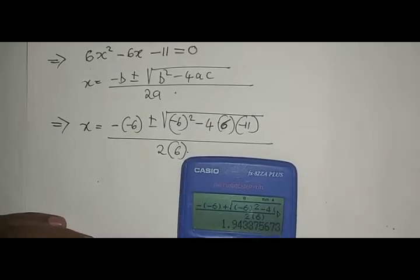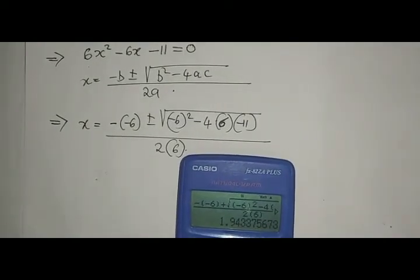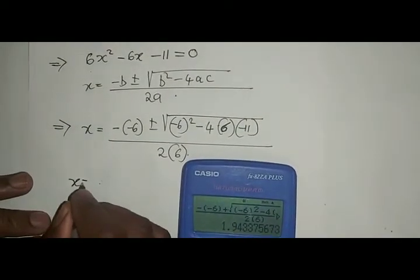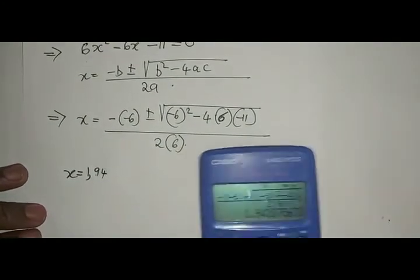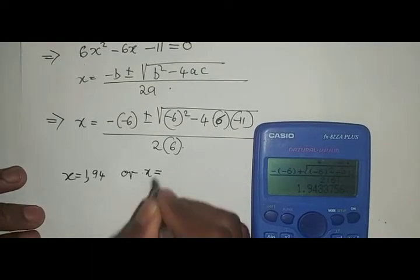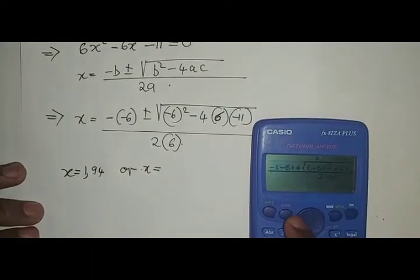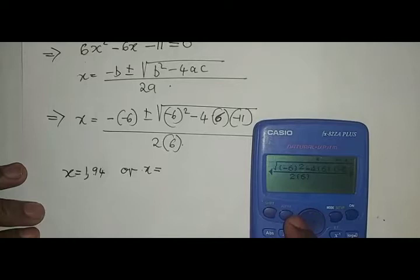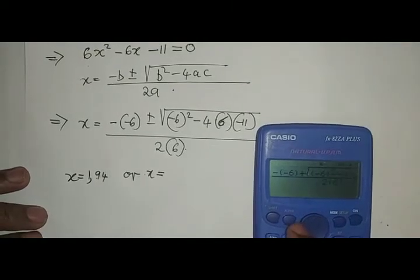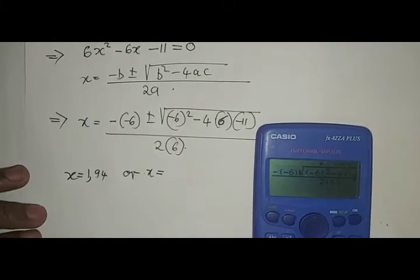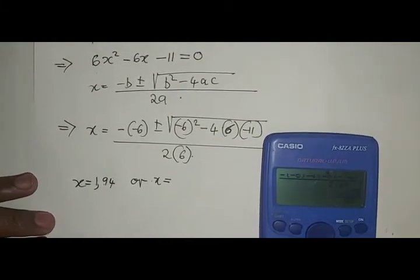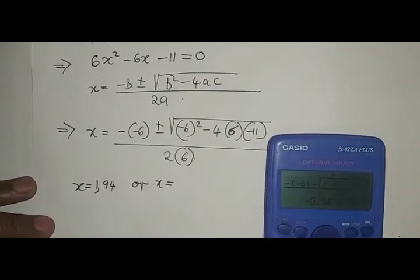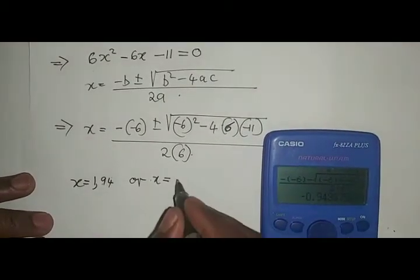Put it as a decimal to two decimal places. That is, x equals 1.94. Or x equals... I take it back where there is plus. Remember there's a plus or minus. Where there's a plus there, I remove the plus, I put a minus, then I say equals to, as a decimal it's x equals -0.94.